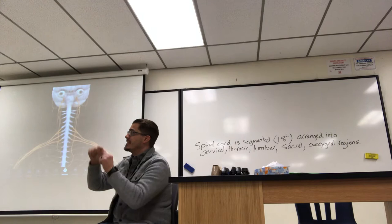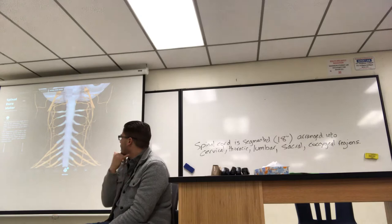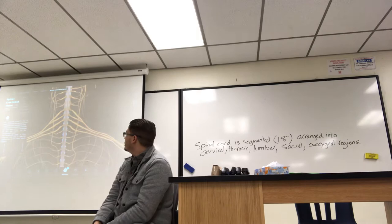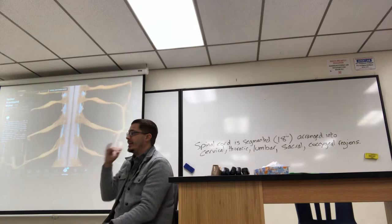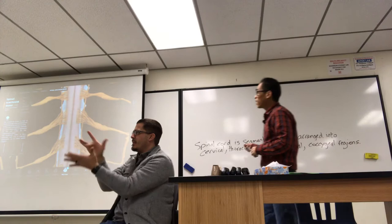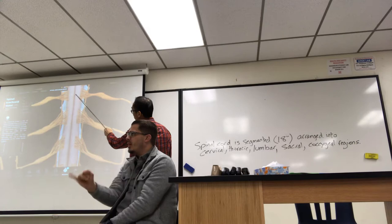Looking at the nervous system in the app with just the spinal cord showing, you can see the spinal cord with spinal nerves coming off each segment. There is a groove running down the middle — a groove in the front and a groove in the back.